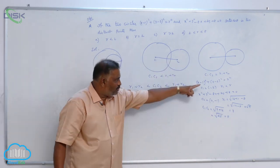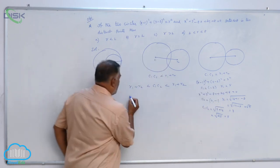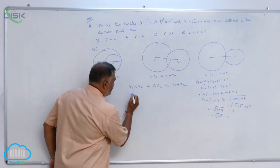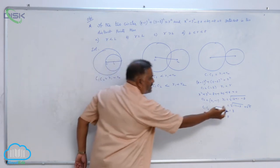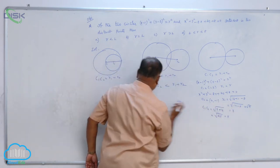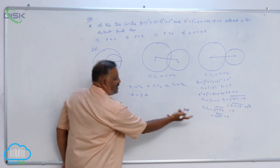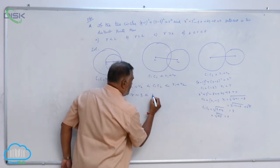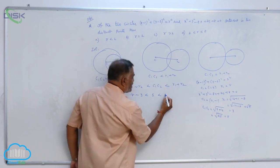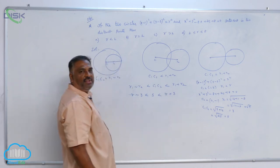Now, R1 minus R2, where R1 means R, so R minus the second radius 3, is less than C1C2, which is 5, which is less than R1 plus R2, or R plus 3.